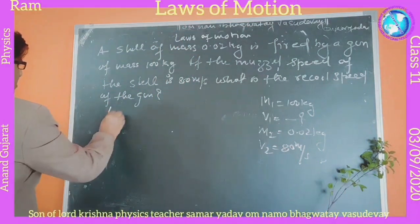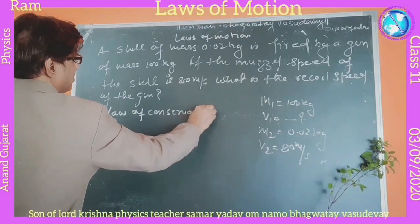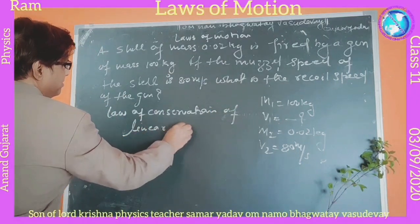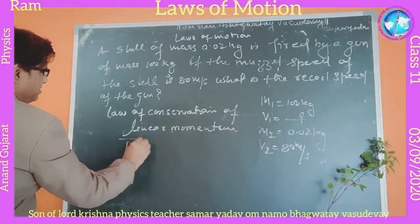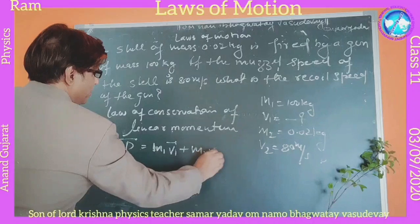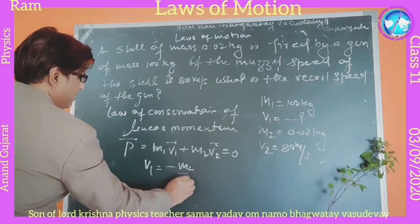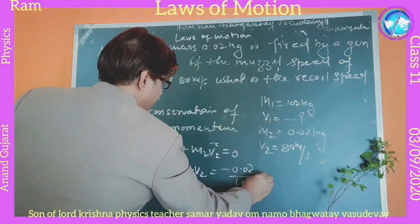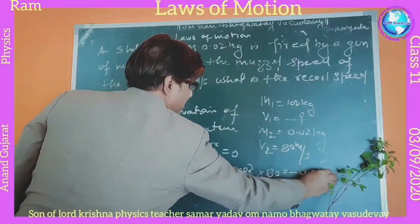According to the law of conservation of linear momentum, the total momentum is equal to M1V1 plus M2V2, which equals zero. So we can get: V1 is equal to minus M2 over M1 times V2, which equals minus 0.02 upon 100 into 80. Therefore V1 is equal to minus 0.016 meters per second.